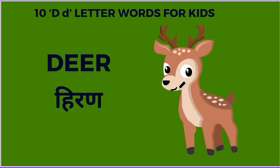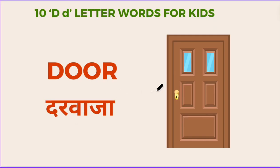What is this? This is deer. D for deer. Deer meaning hirun. What is this? This is door. Door meaning darbaja. D for door. D-O-O-R, door.